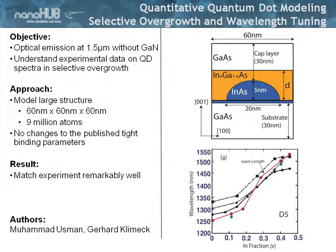So if indium is zero, then basically this buffer isn't there because there is just gallium arsenide around it. Then you ramp up the indium concentration. About two years ago, my student Usman walked into my office and said: 'Look, I can overlap experiment and theory. Here's my red line. I just stuck this into NEMO3D — I didn't modify any material properties, the tight binding properties that we had published before — and I'm overlapping experiments.' And he said, 'Let's go and publish this.'